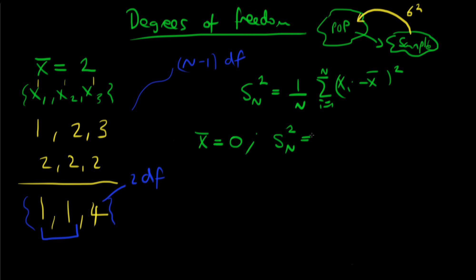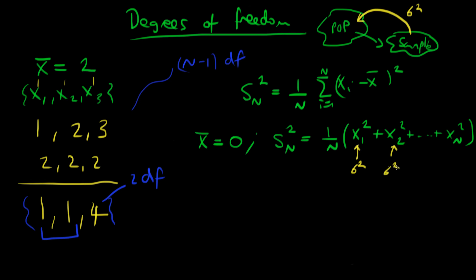In that case, we can write the sample variance as (1/n) times the sum of squares of the individual terms: X1 squared plus X2 squared, all the way up to Xn squared. You might think that each of these terms on its own is an unbiased estimate of the population variance. On average, X1 squared will be a good estimate of sigma squared, X2 squared will also be a good estimate of sigma squared, and so on, continuing all the way up to the last observation — you might think Xn squared also has an expected variance of sigma squared.